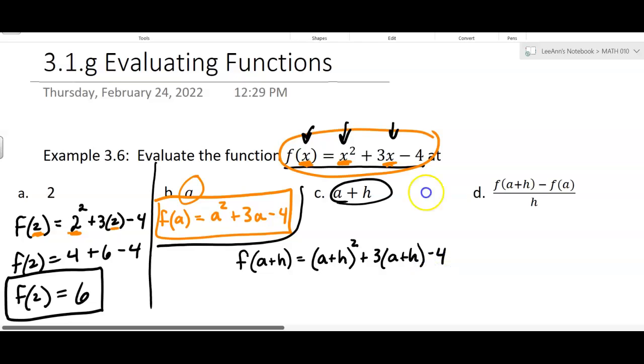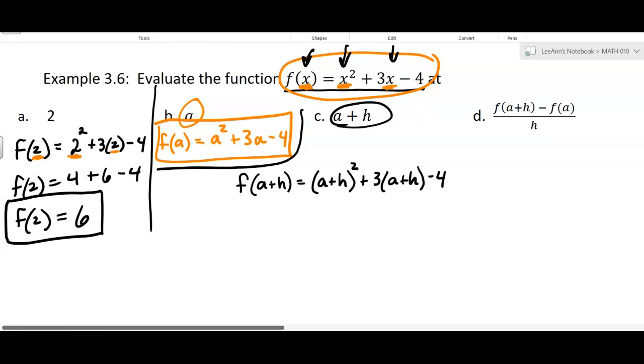Now, this is a polynomial, and we usually do simplify it. So f of A plus H equals, you'll have to square this out. A plus H times A plus H. If you're squaring it, you're going to get A squared plus, you're going to have an AH and an AH, that's 2AH plus H squared. So if you FOIL it, this is what you're going to get.